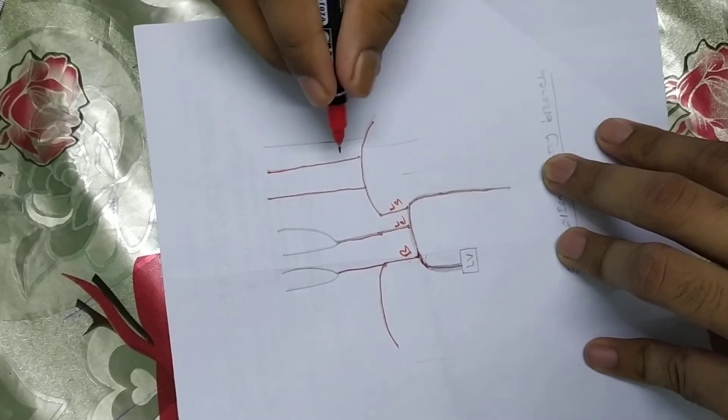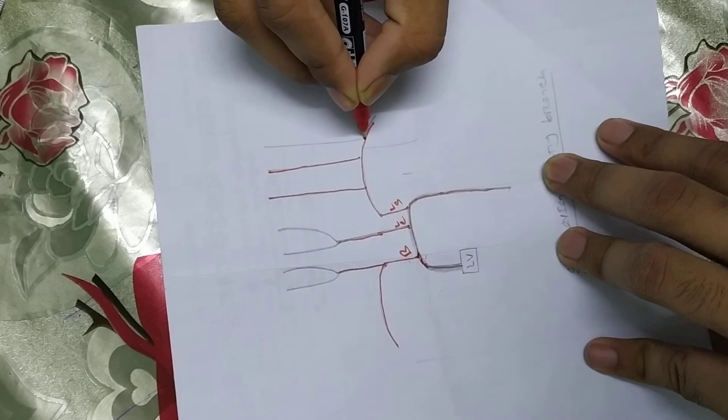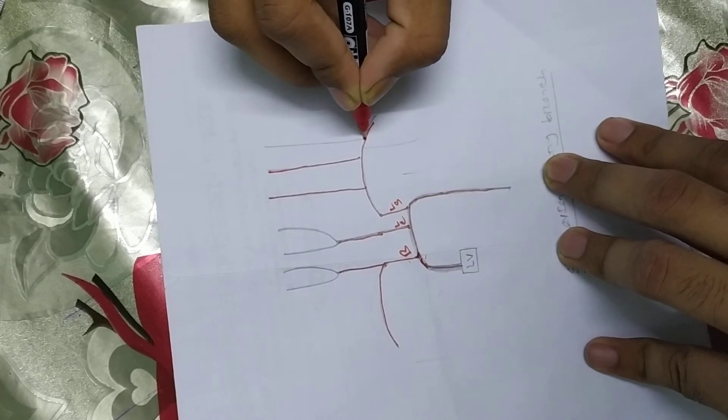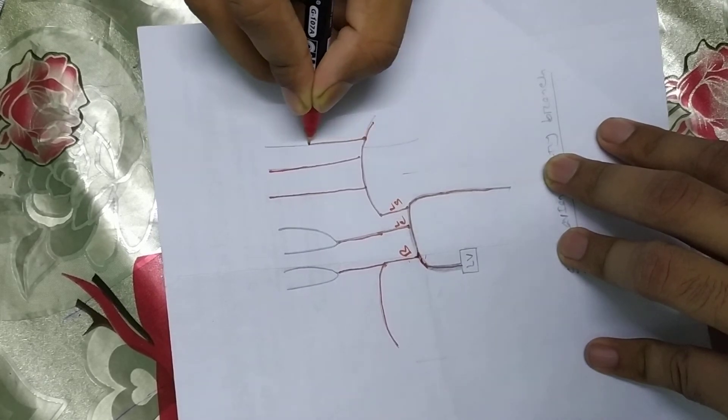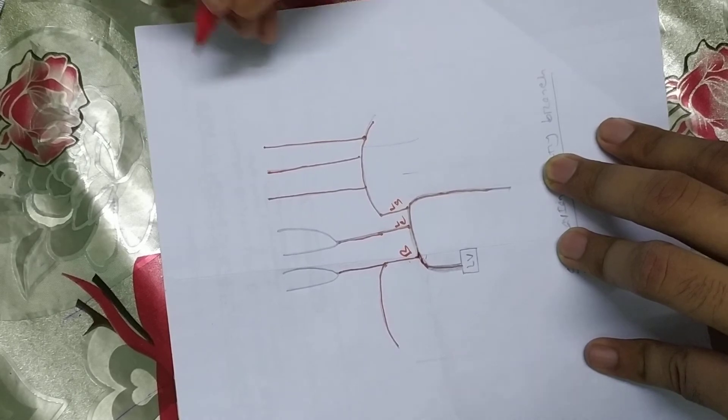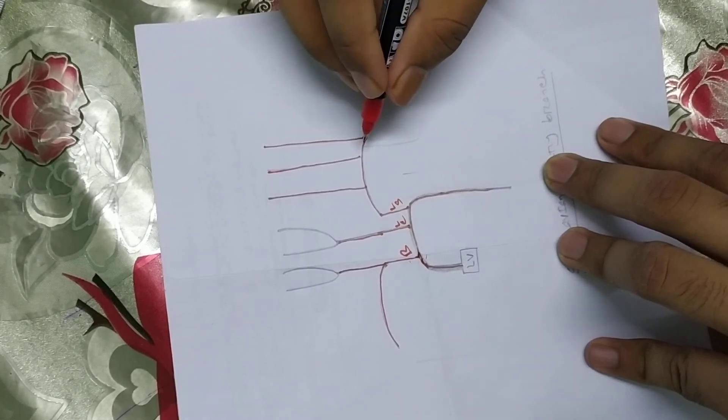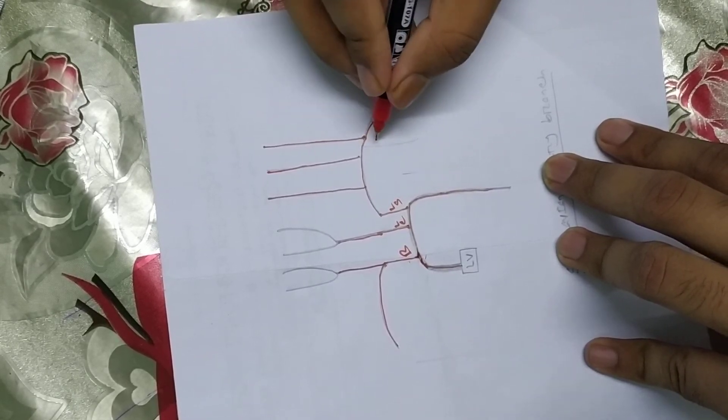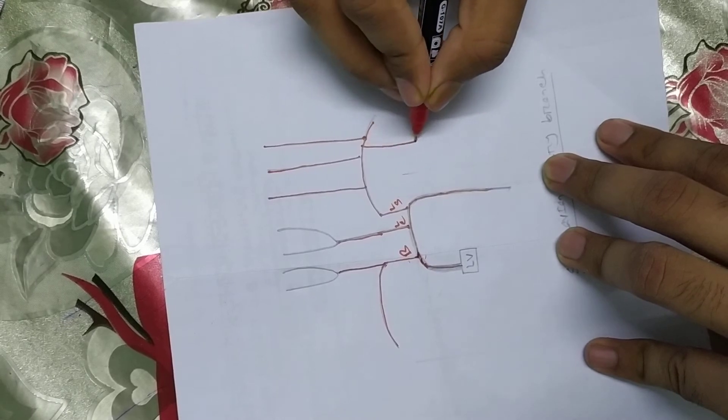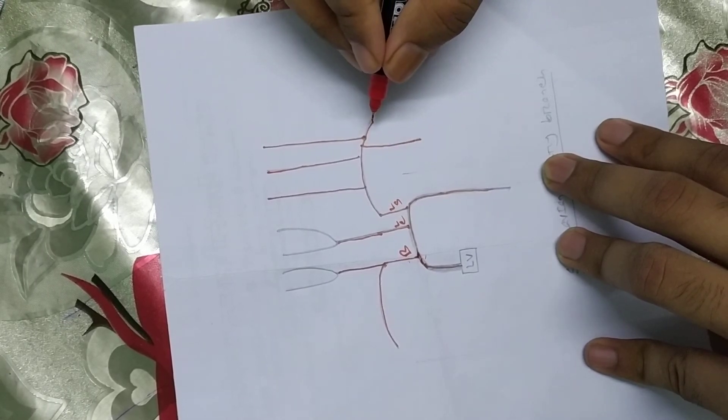This is the costocervical trunk. This is the internal thoracic artery.